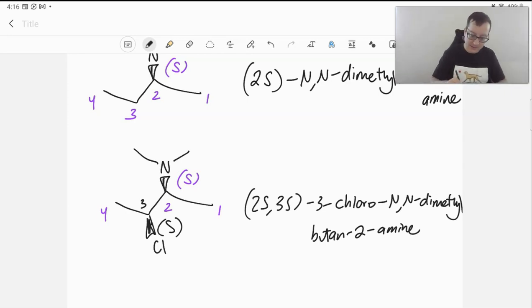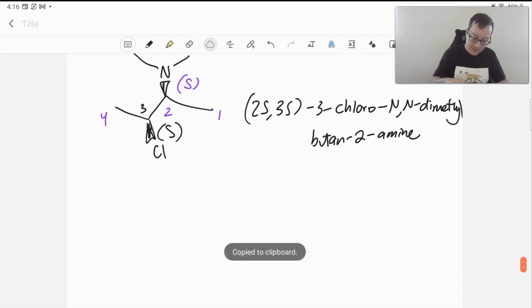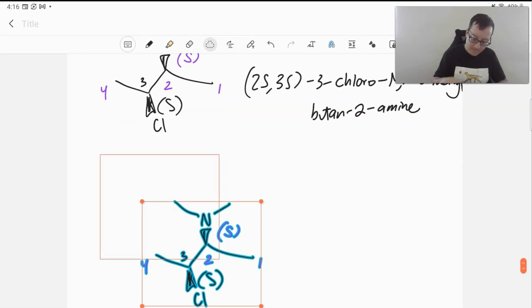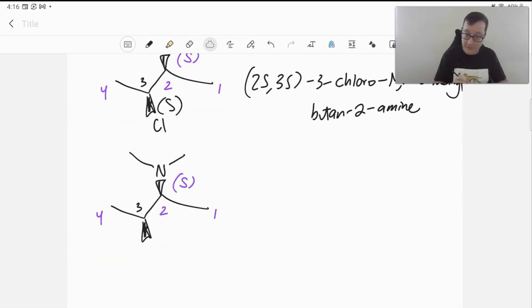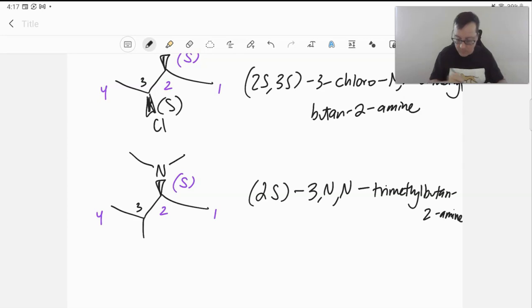If we had a methyl group instead, say we have exactly the same molecule, except for now we have a methyl group. Of course, do not have any chirality now on that third carbon. We would say 2S,3,N,N-trimethyl butan-2-amine.